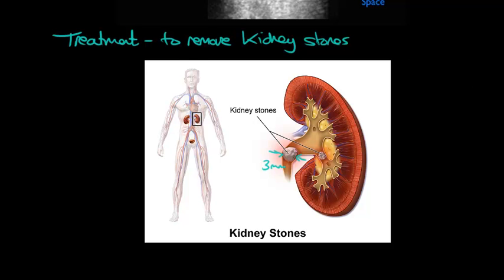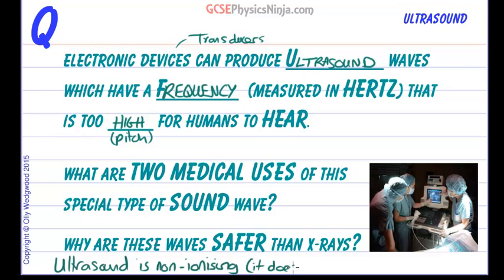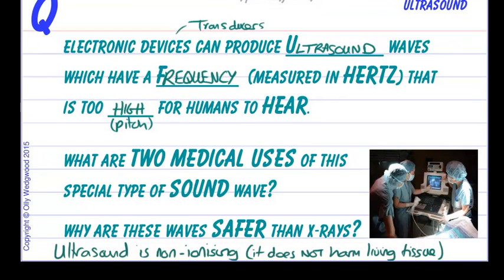So that's ultrasound as a treatment — a very neat way of literally shaking kidney stones to pieces. Now, why are these waves safer than x-rays? Simply because ultrasound is non-ionizing. That's a key word: non-ionizing. It does not harm living tissue. Whereas x-rays are ionizing and can harm living tissue — too much of a dose of x-rays can lead to tissue being damaged, killed, or even turning cancerous.